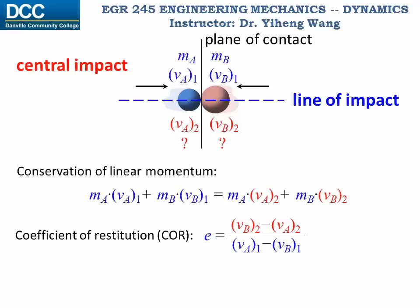The coefficient of restitution equals to the difference in the final velocities, VB2 minus VA2, over the difference in the initial velocities, VA1 minus VB1. Notice here, you must switch the order of the two particles on the numerator and the denominator.